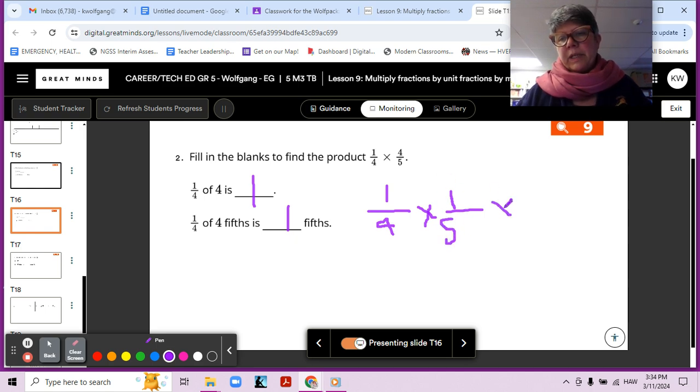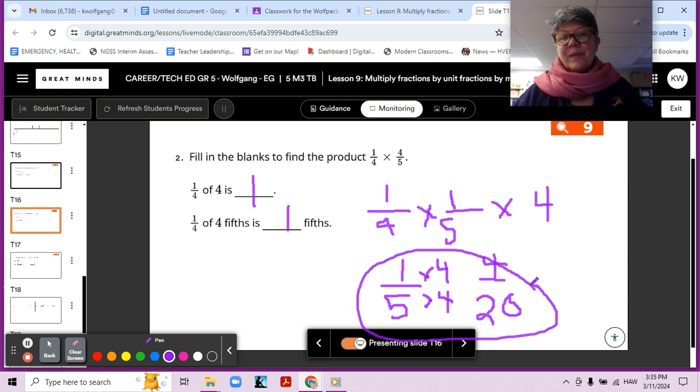And then we'll multiply that answer times four. So that would be one twentieth, right? One fourth times one fifth is one twentieth times four, which would make four twentieths. But we said the answer was one fifth. So which one is correct? One times four is four. And one times five is twentieth. So they are equivalent fractions. They are the same.